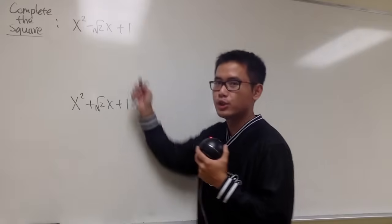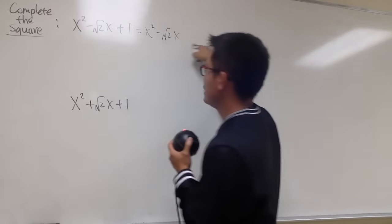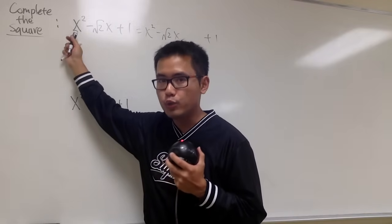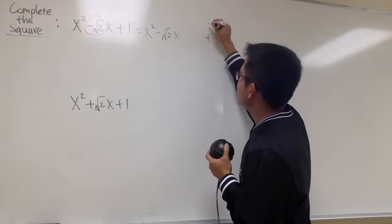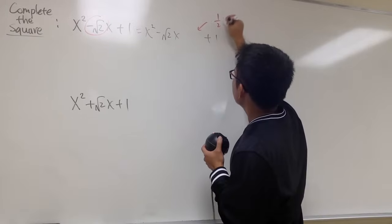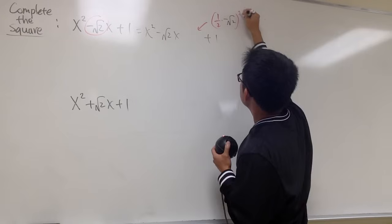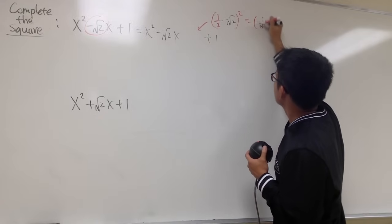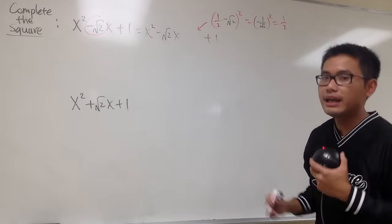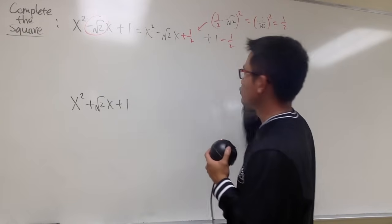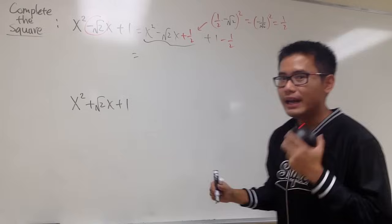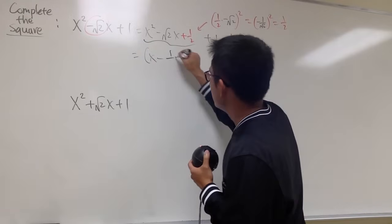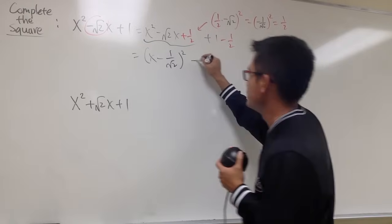For the third part, we're going to complete the square for the quadratic factors. For the first one, x squared minus square root of 2x plus 1, the coefficient of x is negative square root of 2. The magic number is one-half of that coefficient, squared: negative 1 over square root of 2, squared, equals 1 half. So we add 1 half and subtract 1 half. The first three terms become x minus 1 over square root of 2, all squared, and then plus 1 half.